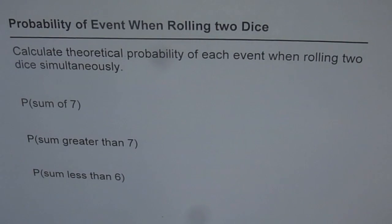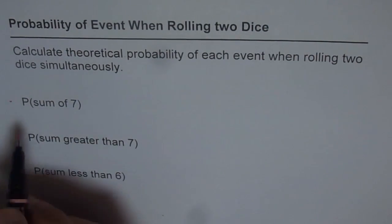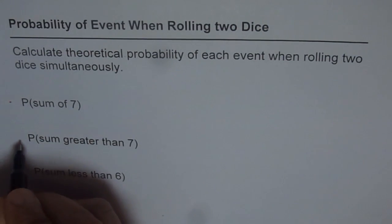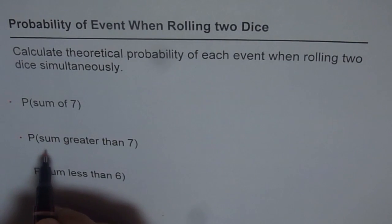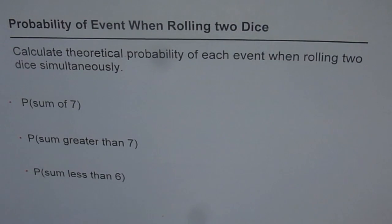Let's now find probability when we roll two dice at the same time. Calculate theoretical probability of each event when rolling two dice simultaneously. We have three problems here to solve. One is probability when sum of the two is seven. The second one is when sum is greater than seven. And the last one is probability of getting a sum less than six.